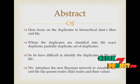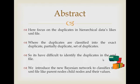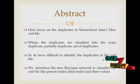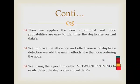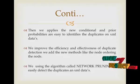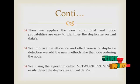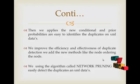We introduce a new Naive Bayes classifier to classify the XML file into parent node and child node values. Then we apply the prior probability condition for easily identifying duplicate detection on the XML data, improving the efficiency and effectiveness of duplicate detection.